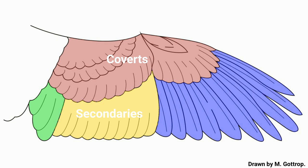On the distal portion, anteriorly, a small set of alula feathers sit atop the primary coverts, which lie atop the long primaries.